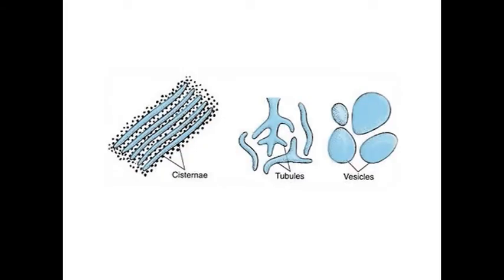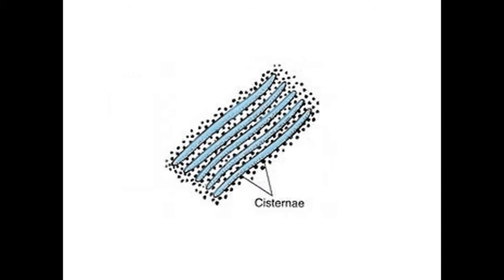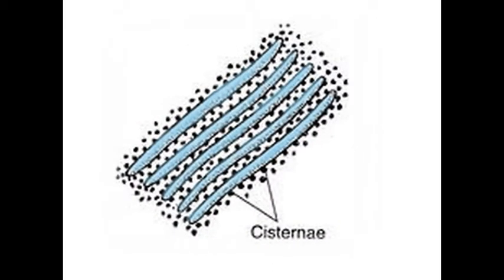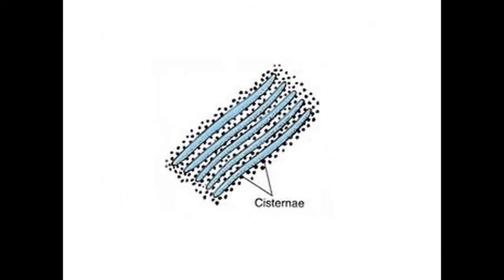There are three principal forms of endoplasmic reticulum. Cisternae: they are long flattened units of 35 to 50 micrometers in thickness, which are arranged parallel in bundles or stacks. They usually occur in those cells which are actively involved in synthetic activity.